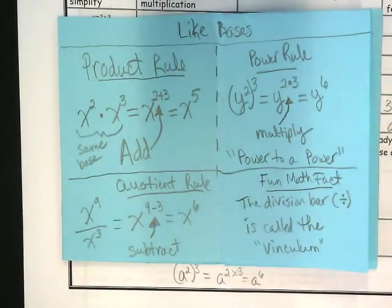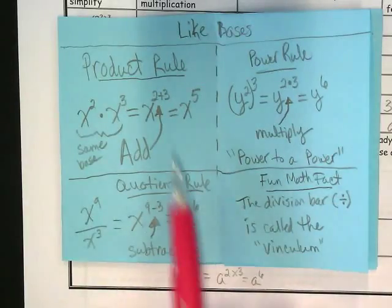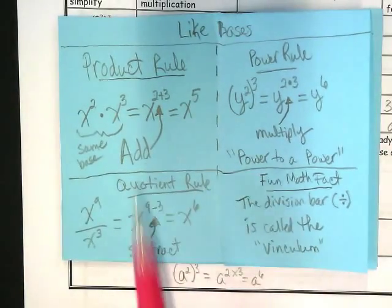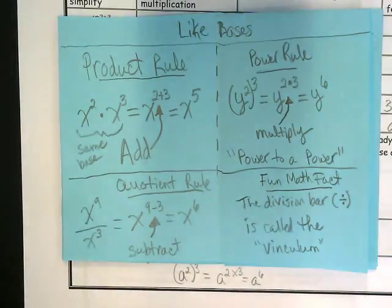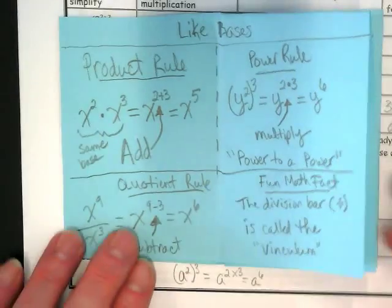So three rules here that are all dealing with like bases. One of them you add, one of them you subtract, and one of them you multiply. Turn the page.